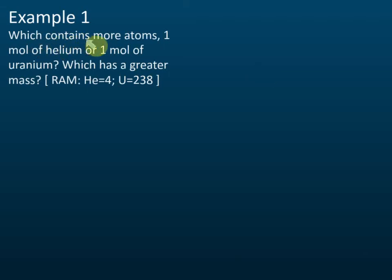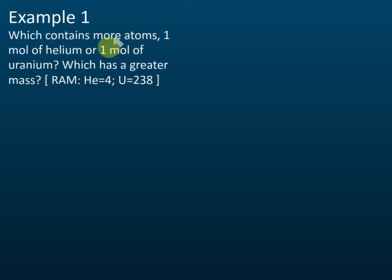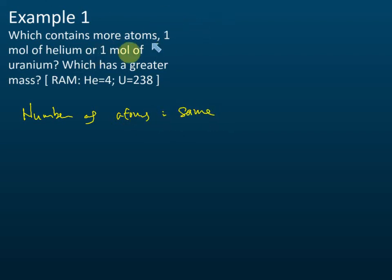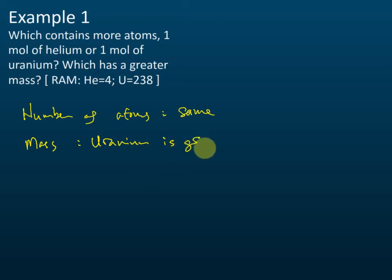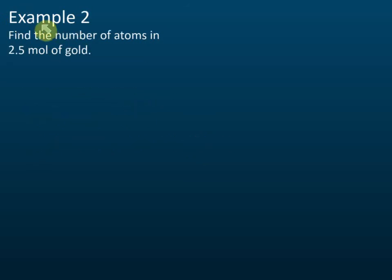Example: which contains more atoms — one mole of helium or one mole of uranium? And which has a greater mass? The relative atomic mass of helium is 4, and for uranium it is 238. One mole of helium and one mole of uranium have the same number of atoms, but uranium has a greater mass because it has a bigger relative atomic mass.